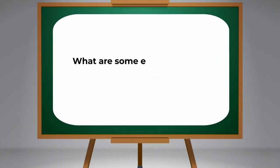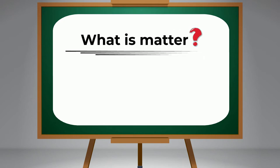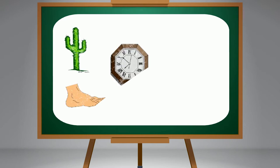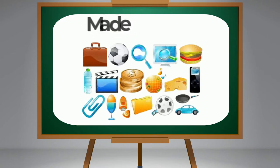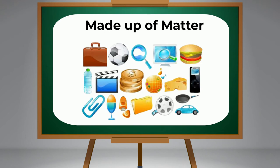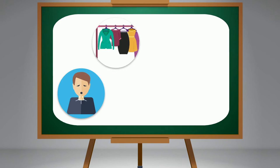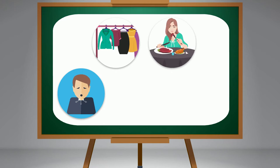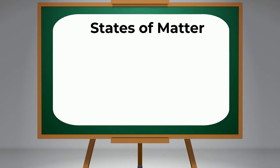What is matter? Anything that has mass and takes space is known as matter. Everything that surrounds us is made up of matter, including ourselves, the air that we breathe, the clothes that we wear, food that we eat, the water we drink—everything is matter.